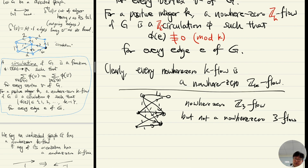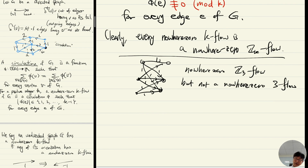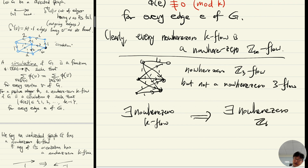Now you may ask: what graphs admit a nowhere-zero Z_k flow? Trivially, if you have a class of graphs admitting a nowhere-zero k-flow, then we know there is also a nowhere-zero Z_k flow. But what about the converse?